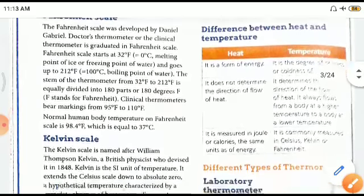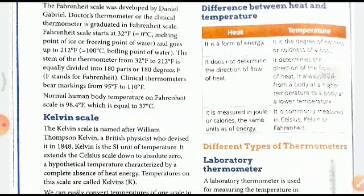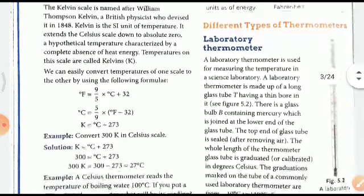Now we move to the difference between heat and temperature. Heat is a form of energy, whereas temperature is the degree of hotness or coldness in a body. It does not determine the direction of flow of heat. Temperature determines the direction—that heat always moves from hot to cold, or from a body of higher temperature to a body of lower temperature. Heat is measured in joules or calories, the same unit as energy. Temperature is measured in Celsius, Kelvin, or Fahrenheit.